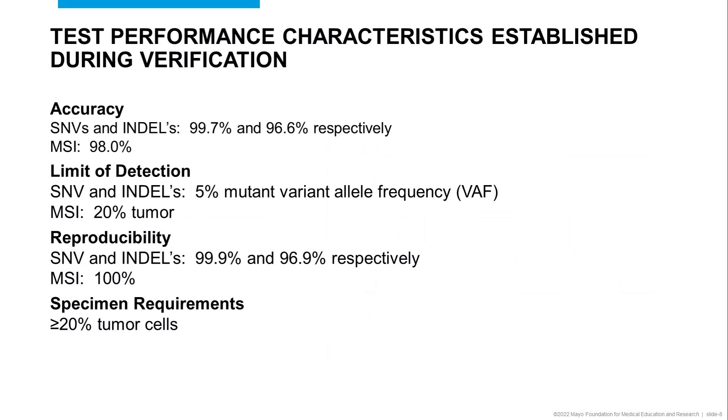Before we went live with the test, we validated it to determine the performance characteristics. The accuracy of the test for single nucleotide variants and indels was 99.7% and 96.6% respectively. For microsatellite instability it was 98%. The limit of detection of the test was 5% for SNVs and indels, and we can go down to 20% tumor for microsatellite instability. The test has high reproducibility and it requires at least 20% tumor cells.